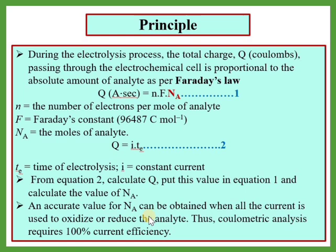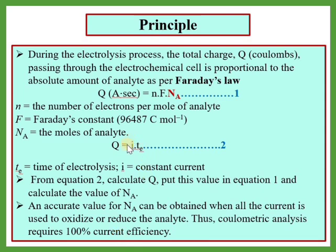For this method, one important term is that current efficiency should be 100%. The current must be due to the analyte only — then we get the absolute value. If the current is also due to species other than the analyte, then the charge would be due to two or three species rather than a single analyte. So the current must be solely due to the analyte; that is why current efficiency must be 100%. If that is not the case, current efficiency will be less than 100%.